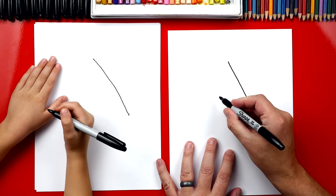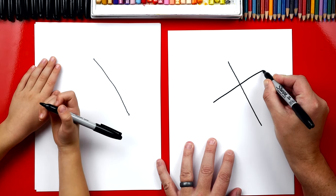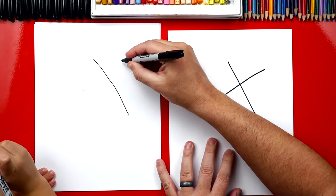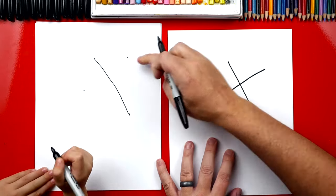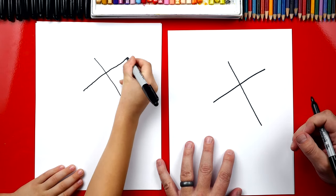Now we're going to draw a shorter line going across the top. Start over here, right there, and draw a shorter line across. It's like a lowercase t. Yeah, it looks like a lowercase t. Good job.